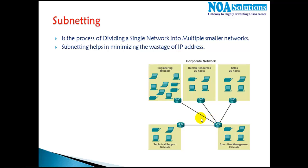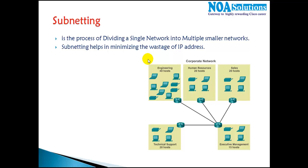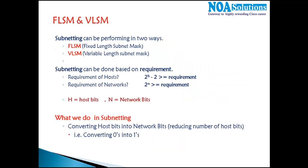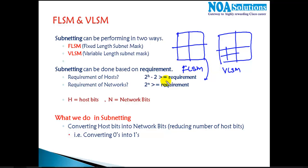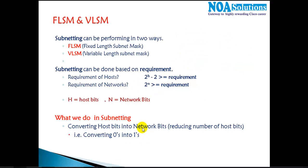In the previous section we saw an introduction to subnetting, where subnetting is a method of dividing one single network into multiple small networks. It majorly minimizes the wastage of IP addresses. There are two methods: FLSM, where we divide the network into equal sizes, and VLSM, where sizes may or may not be equal. We also saw the formulas used for calculations, and in subnetting we convert zeros into ones.